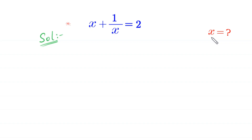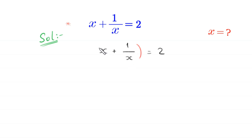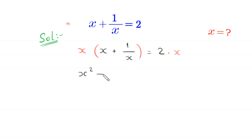So let us start. We have the equation x plus 1 over x is equal to 2, and from here we multiply both sides of this equation by x. This x times x will become x squared, and x times 1 over x will become plus 1, is equal to 2 times x, that is 2x.